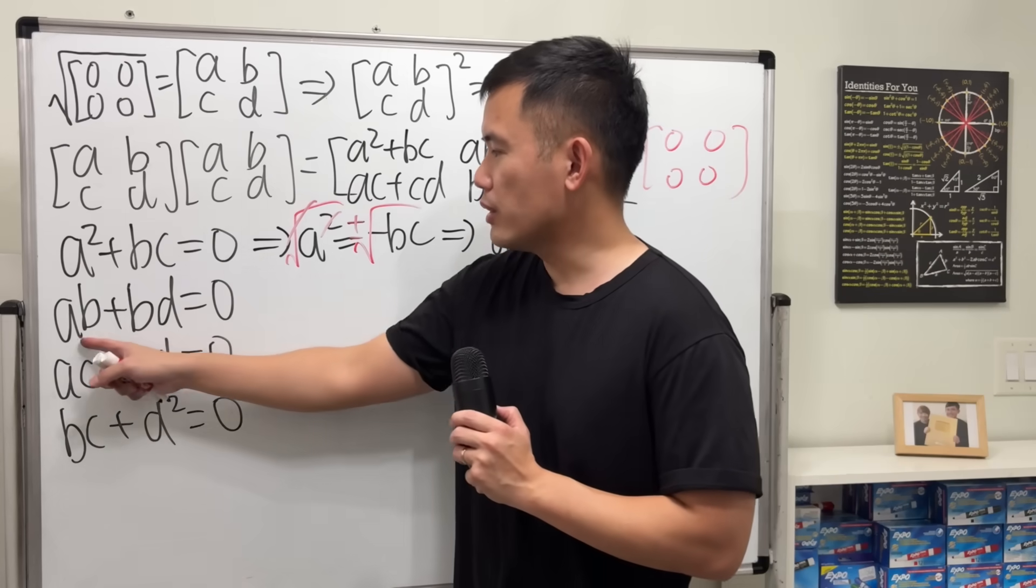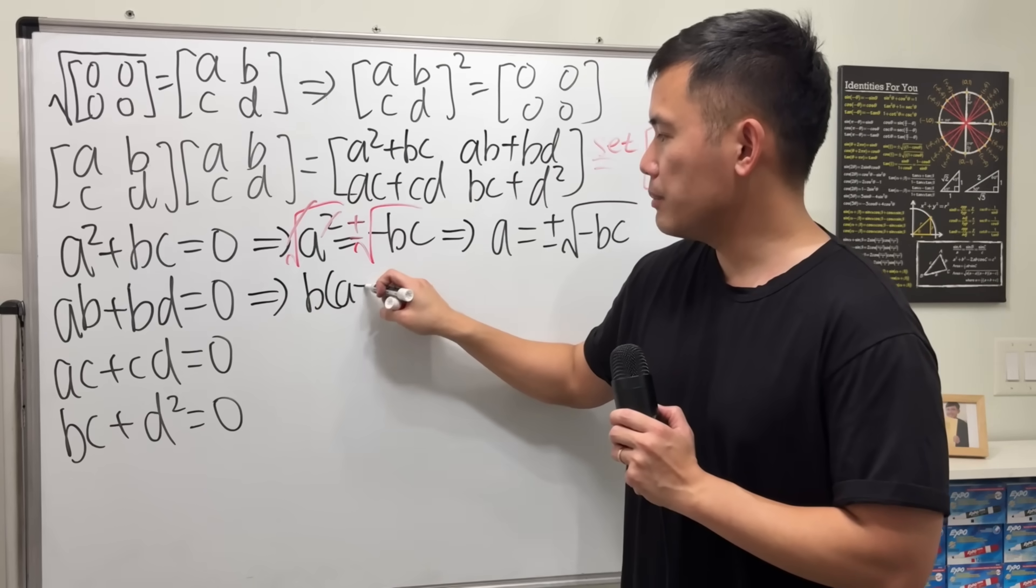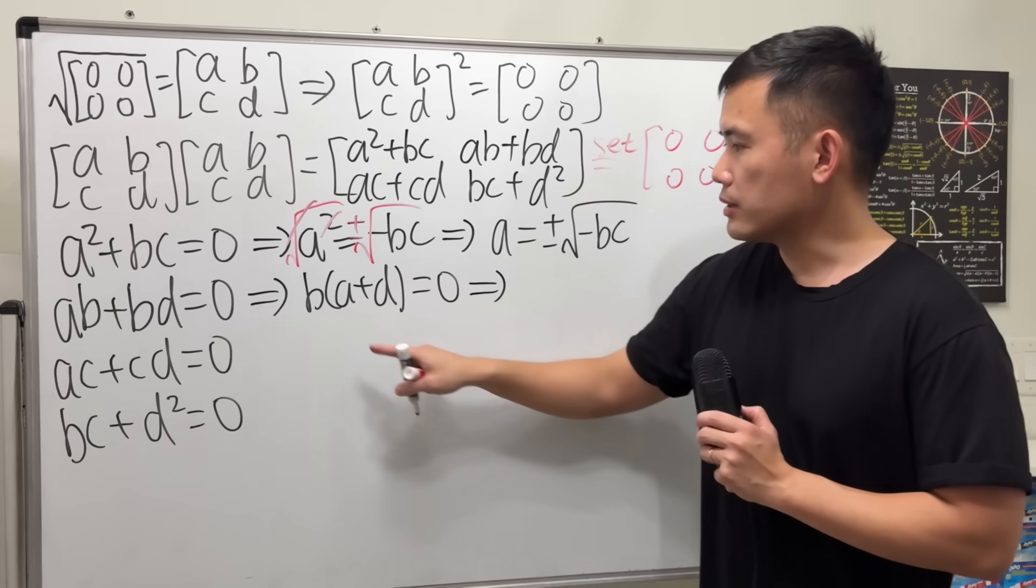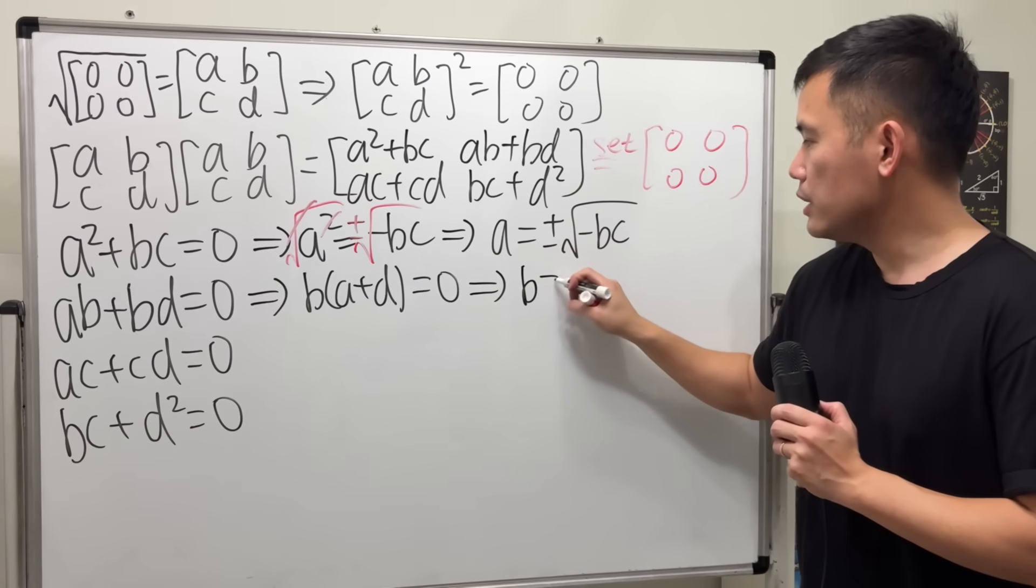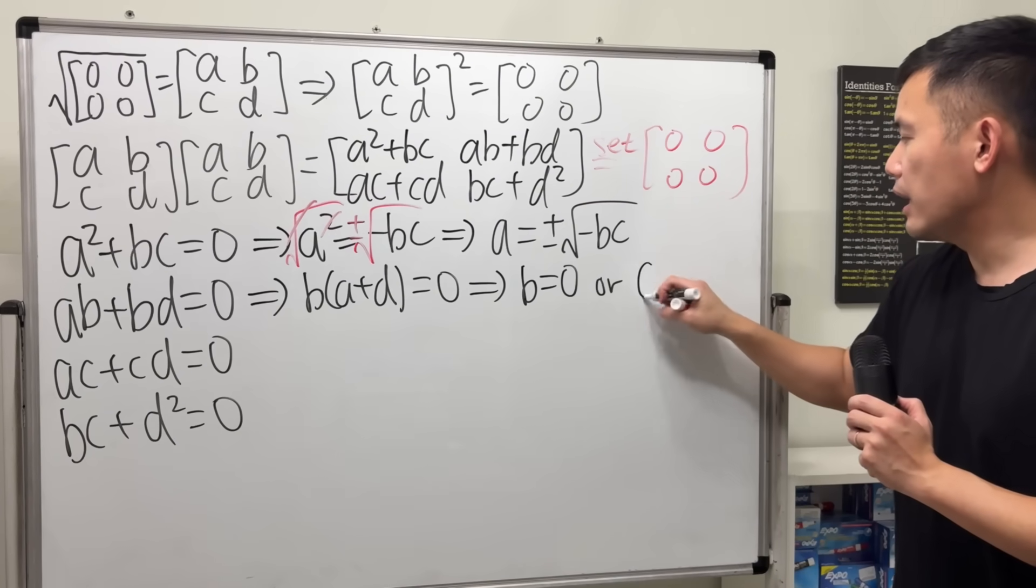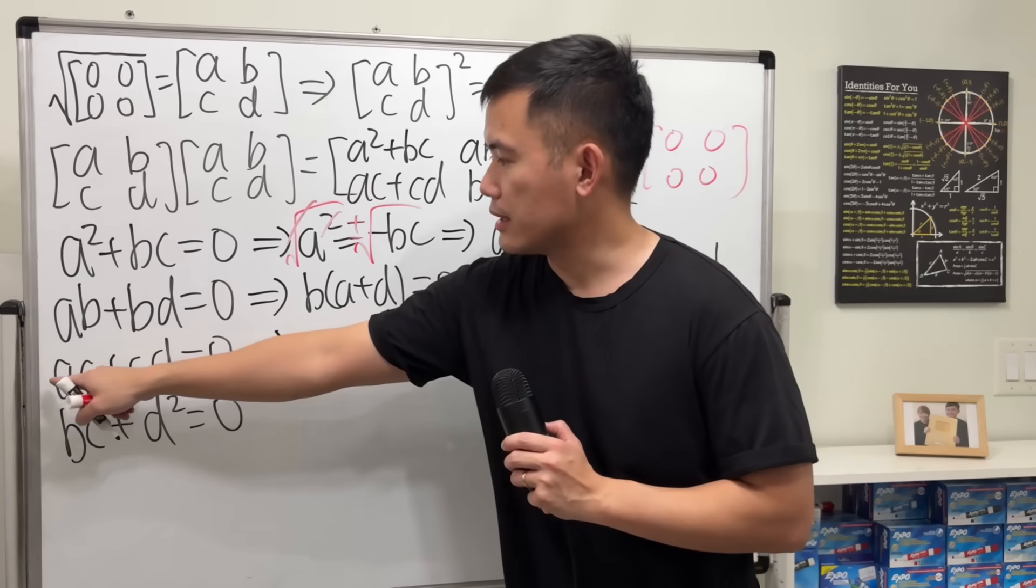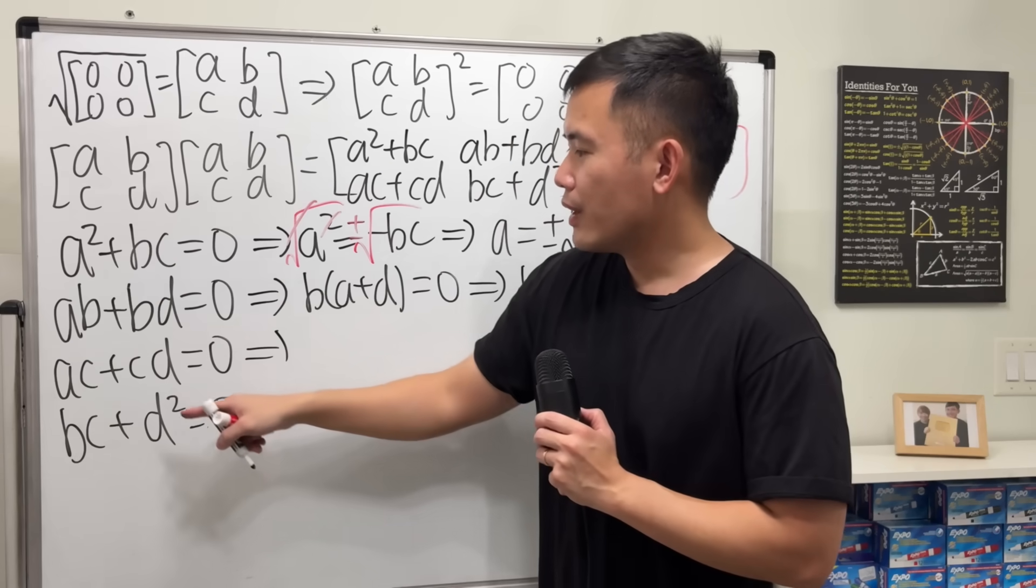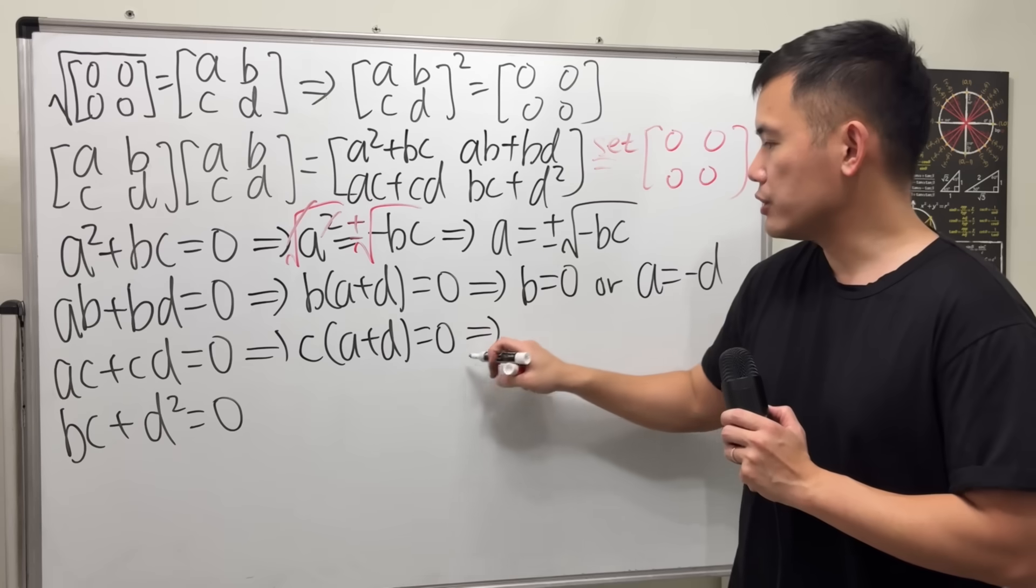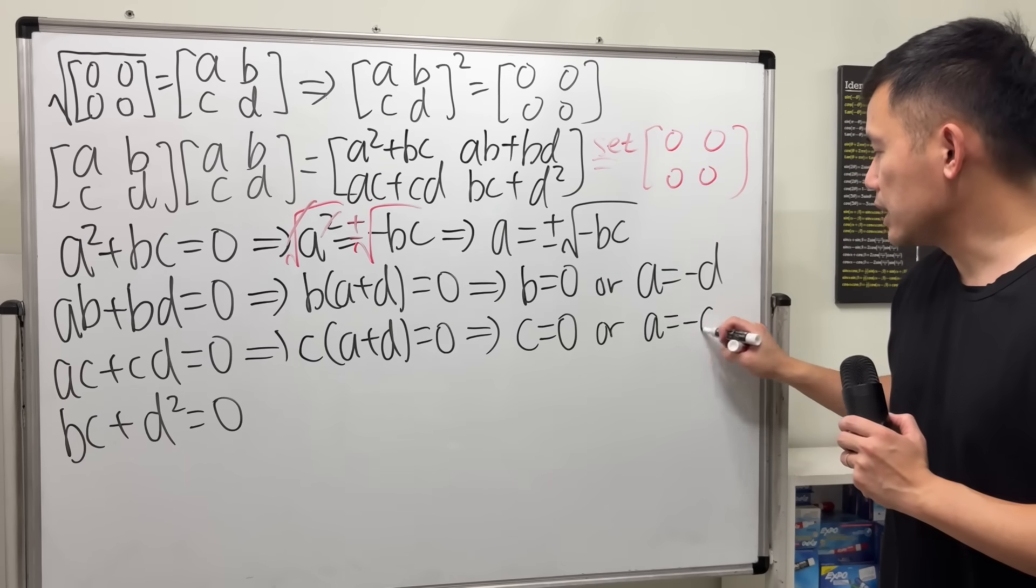Right here, let's just do a natural thing because we see the b and b right here. So we can factor that out. And we get b(a + d) and that's equal to zero. So this tells us that either b is equal to zero or a plus d is equal to zero. In another word, we can say a is equal to negative d. Now, for the third equation, we are going to factor out c and we can see a similar situation. We get c is equal to zero or a is equal to negative d.